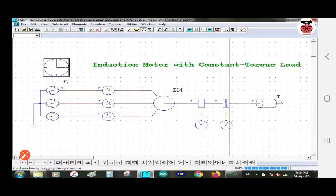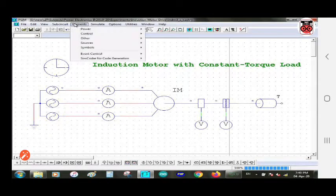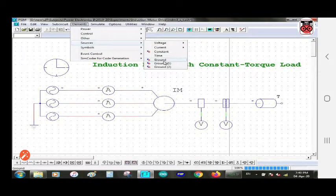Here, I have already made the connections, but I have shown how it is done. First of all, you need this ground. This ground is from the element section, source, and this is a ground terminal. You can take this ground element from here.